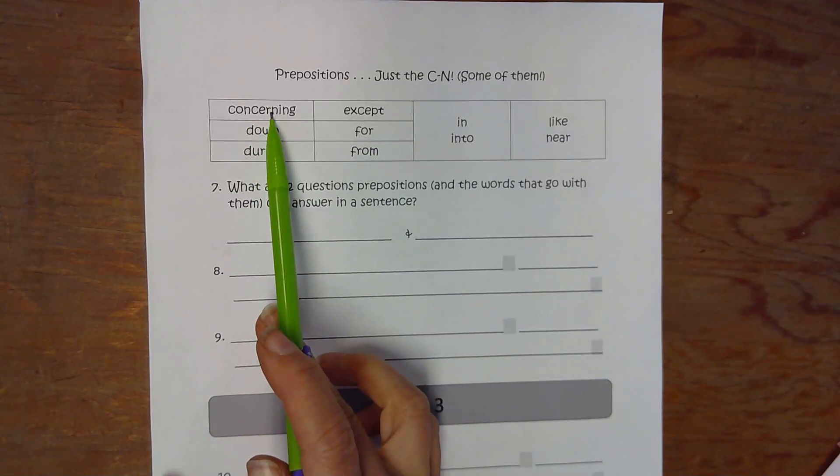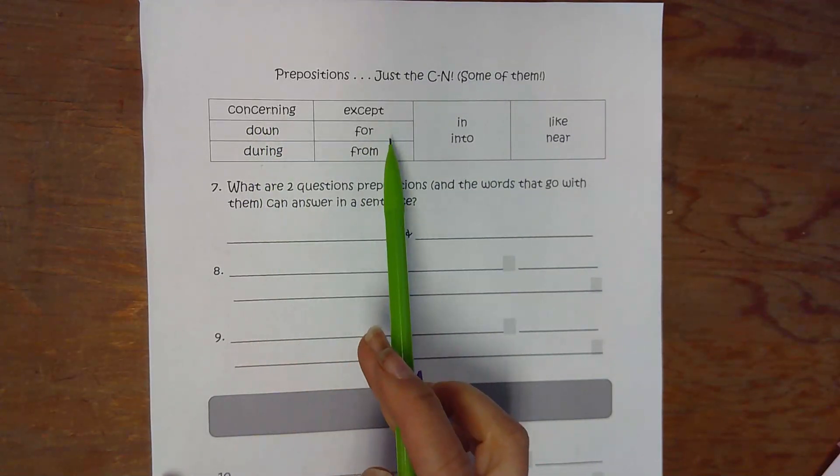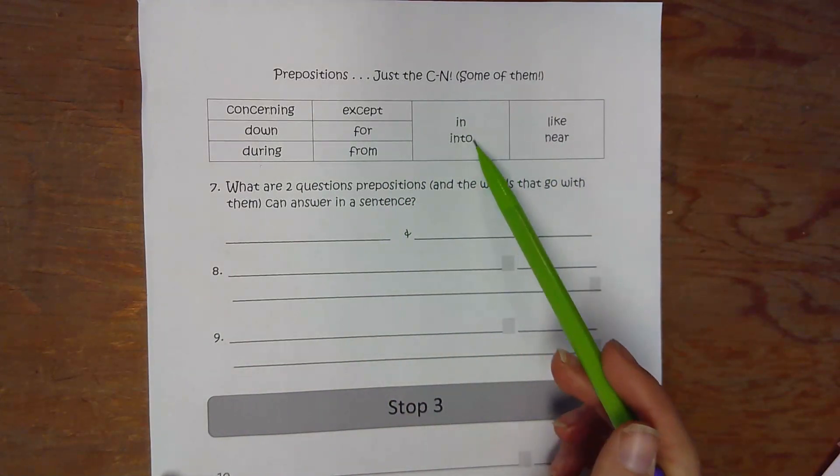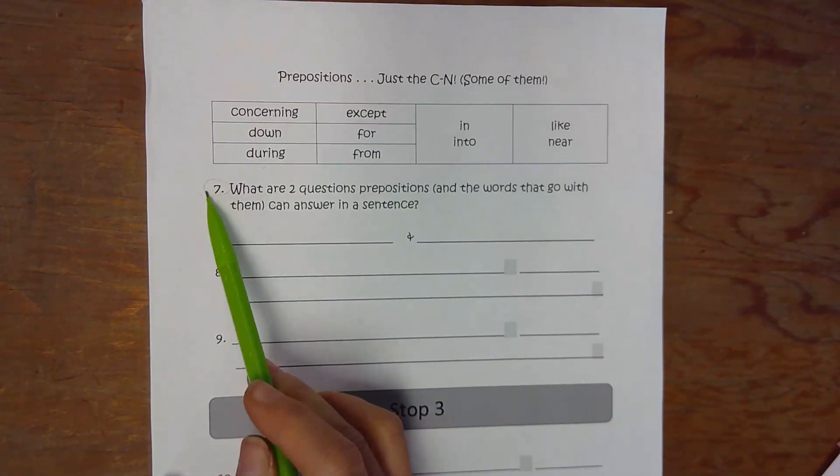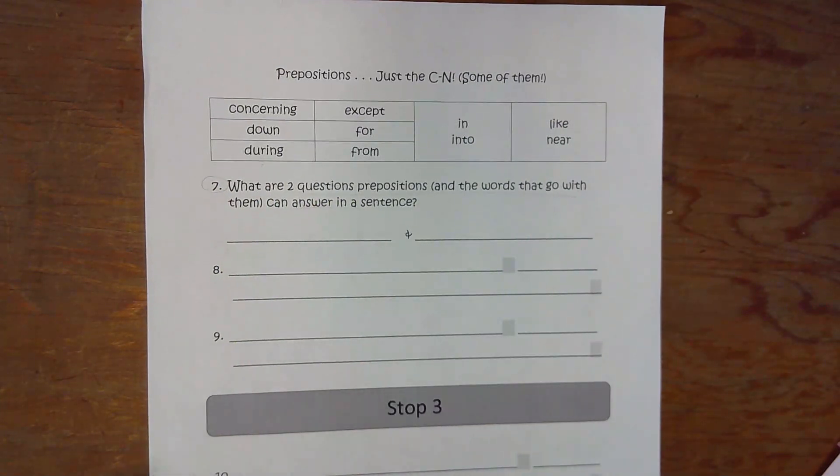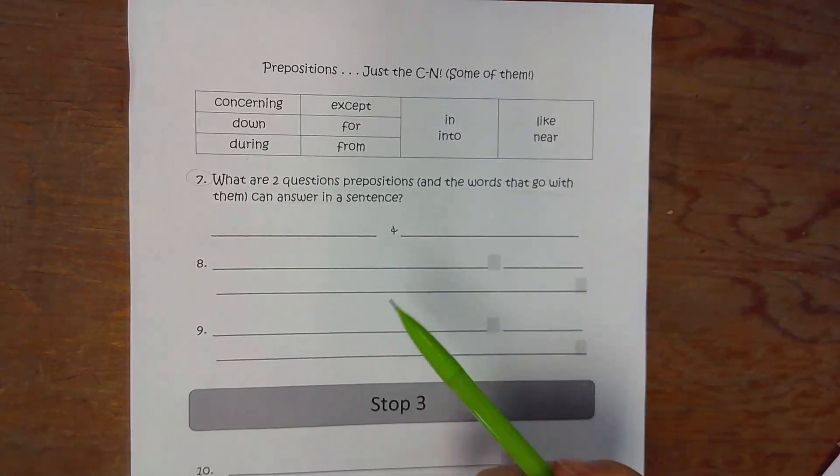So we've worked with concerning, down, during, except, for, from. Today will be in, into, but also number seven: what are two questions that prepositions and the words that go with them can answer in a sentence? Hopefully you're getting...